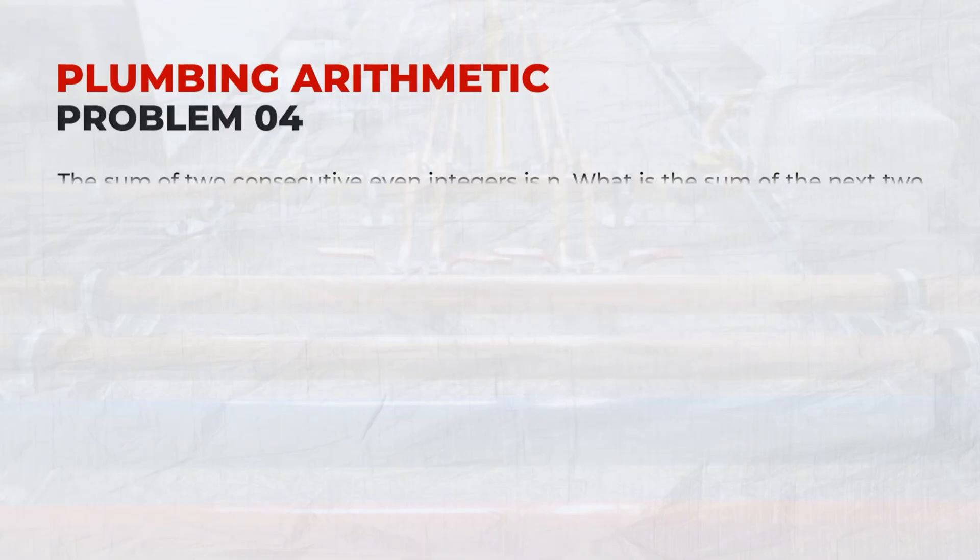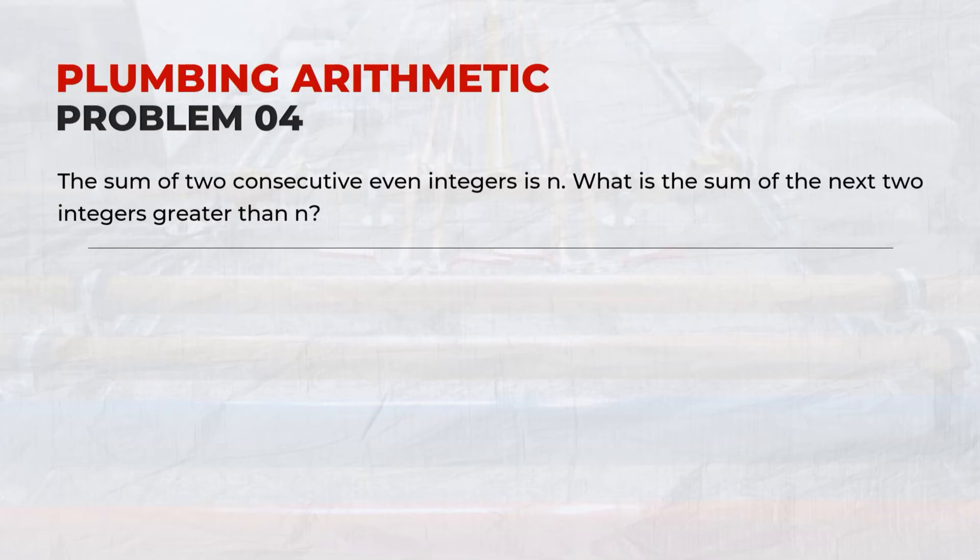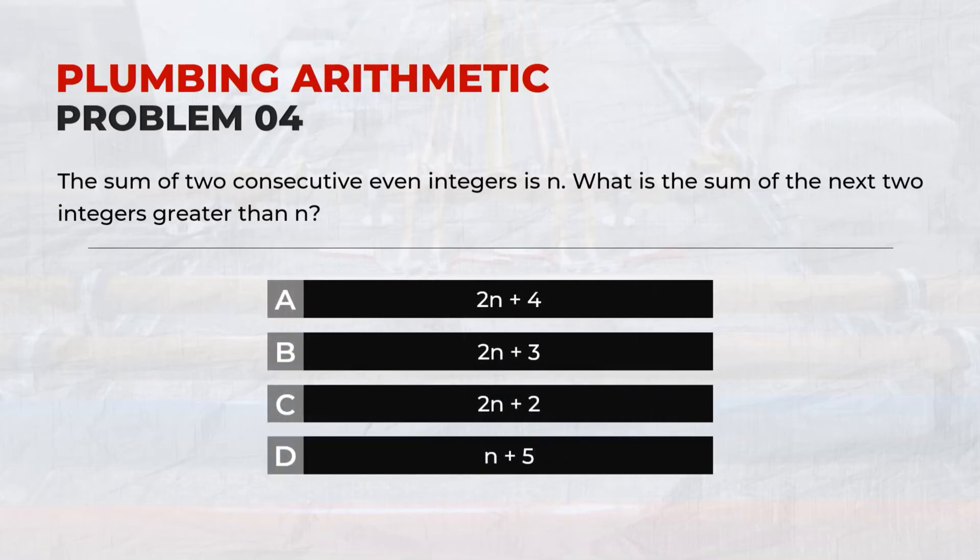Problem 04: The sum of two consecutive even integers is n. What is the sum of the next two integers greater than n? Answer: B, 2n plus 3.